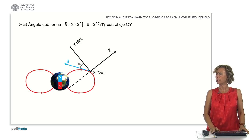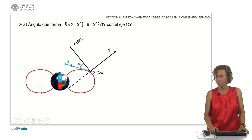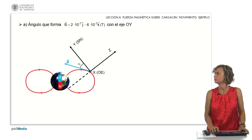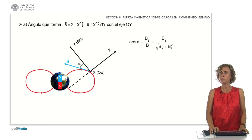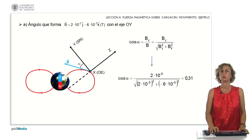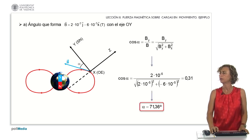To find the angle, the cosine of this angle equals the adjacent leg divided by the hypotenuse. Here, the adjacent leg represents the Y component of vector B. The cosine of alpha is expressed as B_Y divided by the modulus of B. The modulus of a vector equals the square root of the sum of each squared component. Substituting the values, we find that the cosine of the angle is 0.31, resulting in an angle of 71.36 degrees.